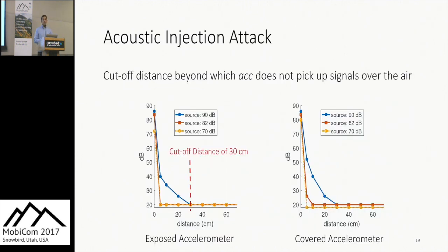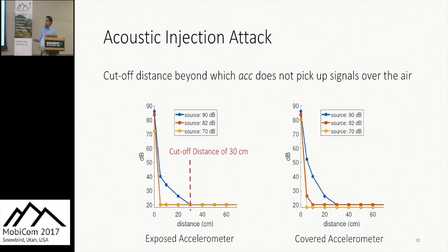We also tried an acoustic injection attack, as proposed at EuroS&P. The idea is that an accelerometer measures vibration, and vibrations can come through the body or through the air. We placed a high-energy speaker next to the accelerometer and evaluated the distance beyond which the accelerometer cannot capture an air-transmitted signal above noise level, testing both exposed and covered accelerometer scenarios across different distances and magnitudes. We found that beyond 30 centimeters, the accelerometer does not capture any signal over the air — so the attacker must be closer than 30 centimeters.